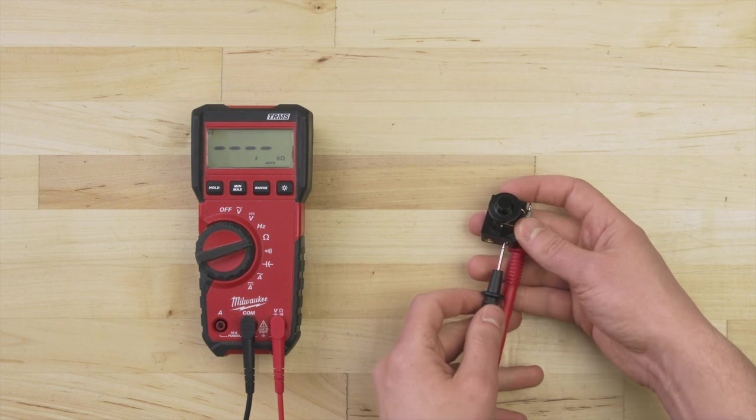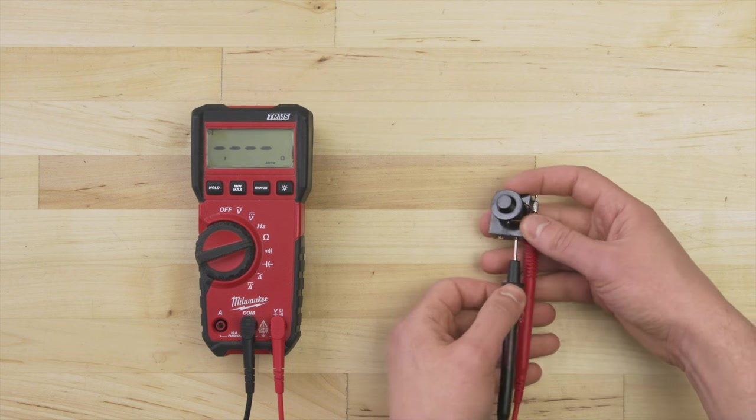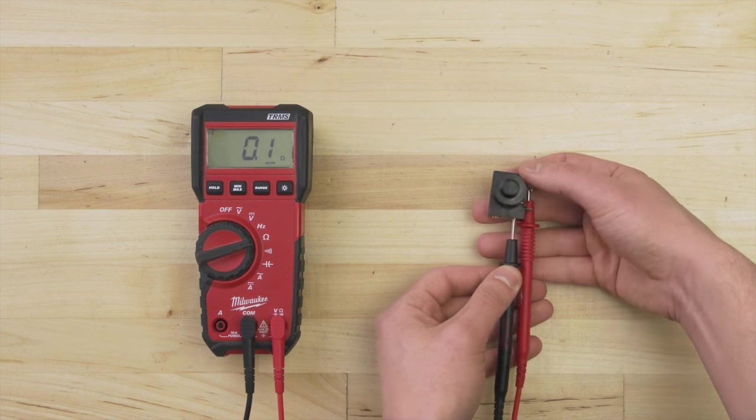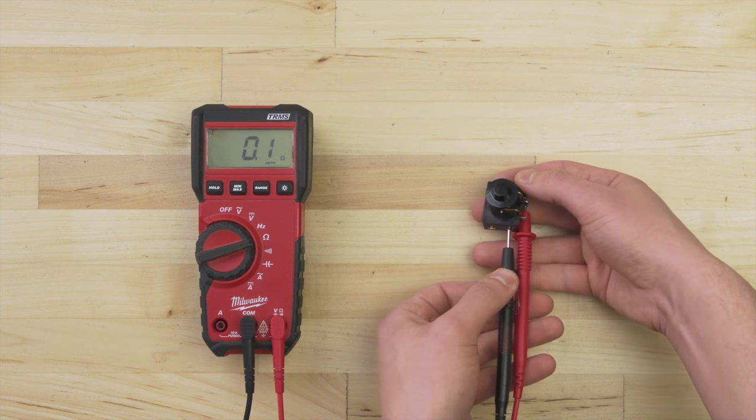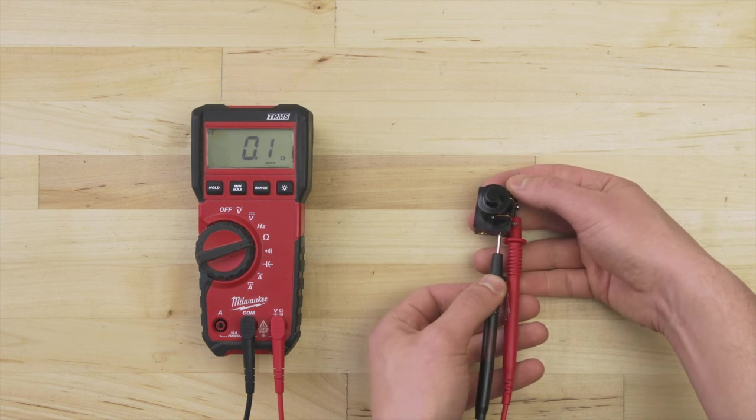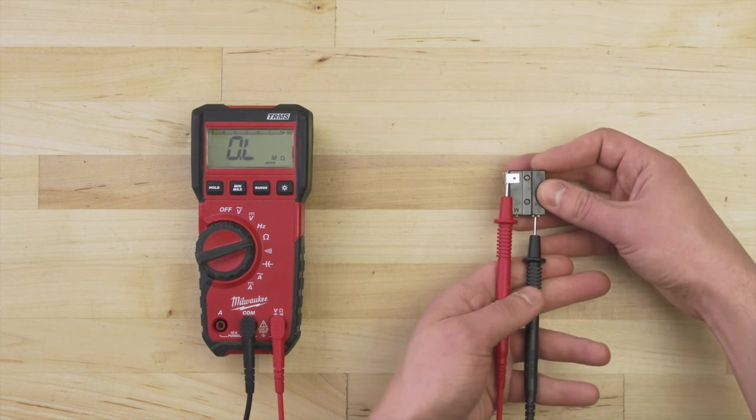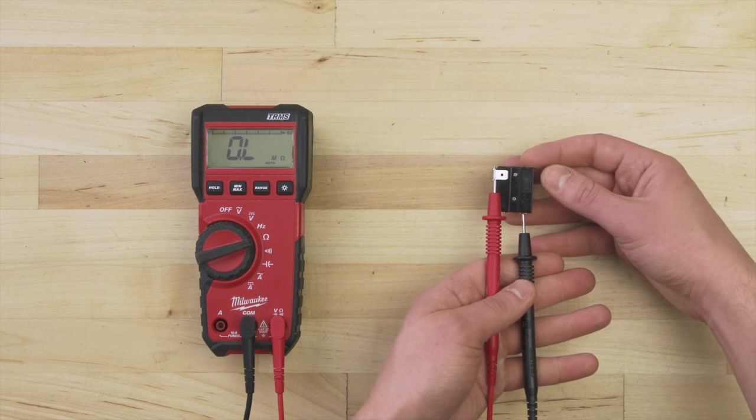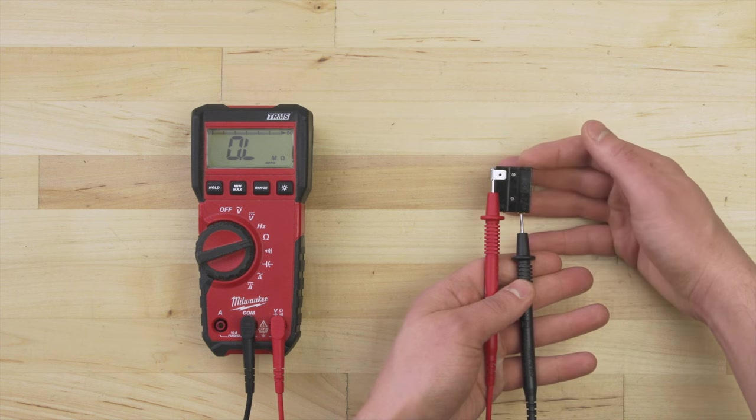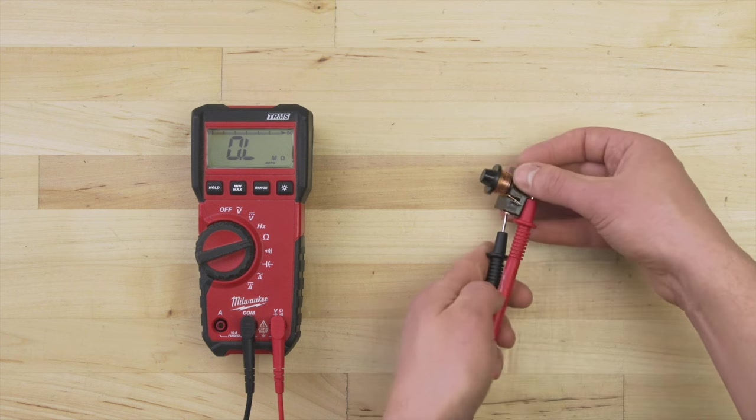For this relay, you'll need to do two continuity tests. First, test between the M terminal and the free terminal. There should be continuity. Now test between the S and the free terminal. When the relay is facing down, there should be no continuity.